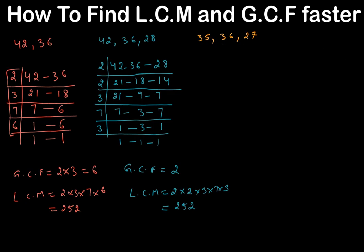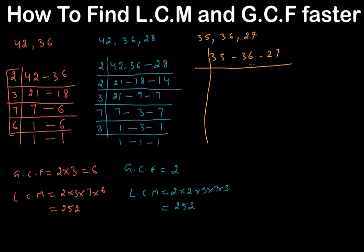I'm going a little slow because I want you to see exactly what I'm doing so you can learn it. Let's try three more numbers: 35, 36, and 27. Order doesn't matter. Looking at these numbers, I don't think any of them share a common factor, so their GCF is basically 1. Now let's find the least common multiple. Try 3: 3 goes into 36 and 27.